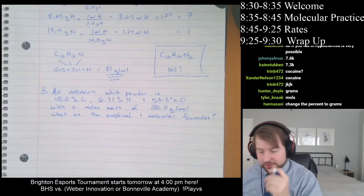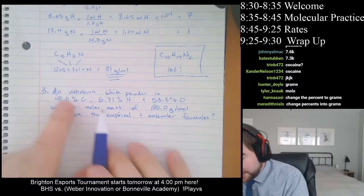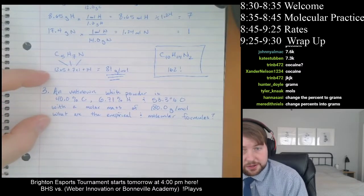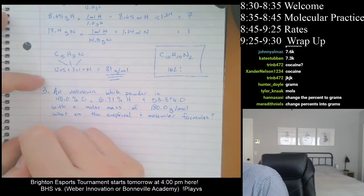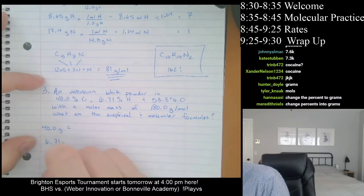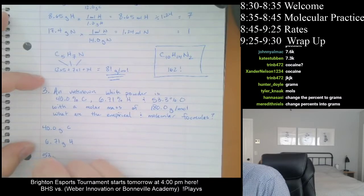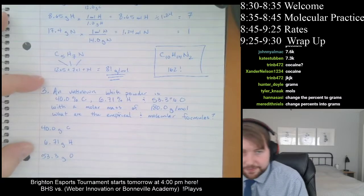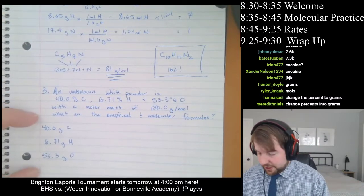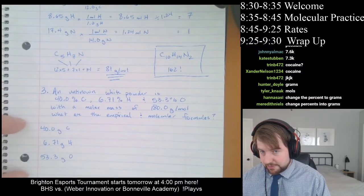Alright, grams and moles. So what we do is we change the percentages — take these percentages and turn them into grams. We say 40 grams of carbon, 6.71 grams of hydrogen, and 53.3 grams of oxygen. We got those percentages from the problem and turned them into grams.